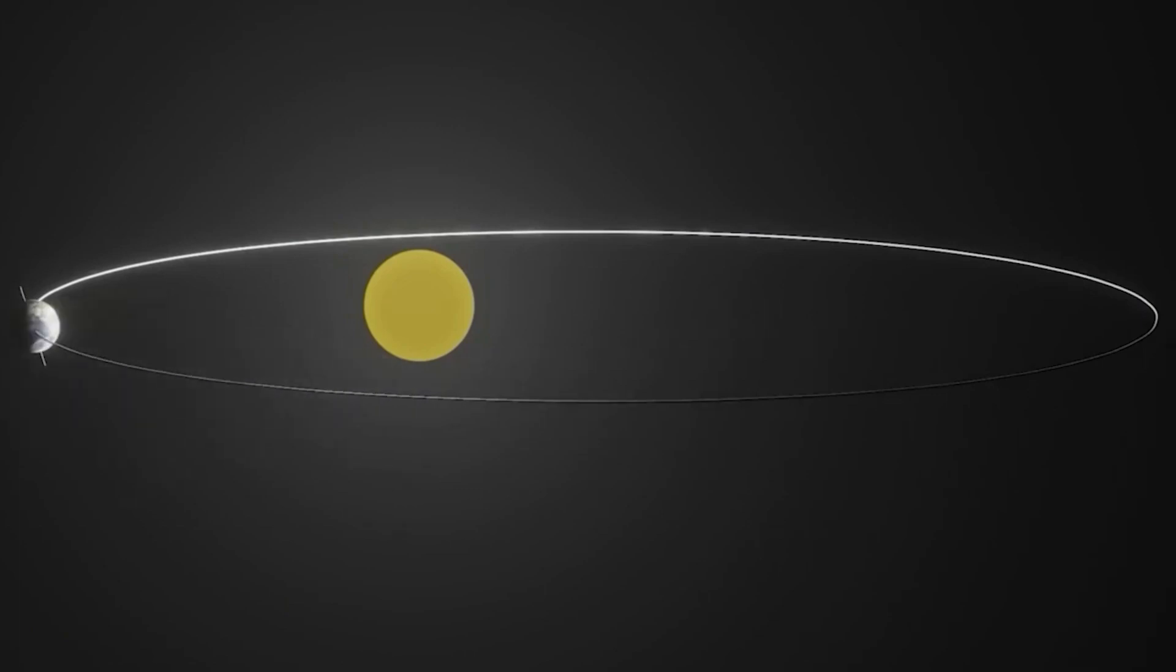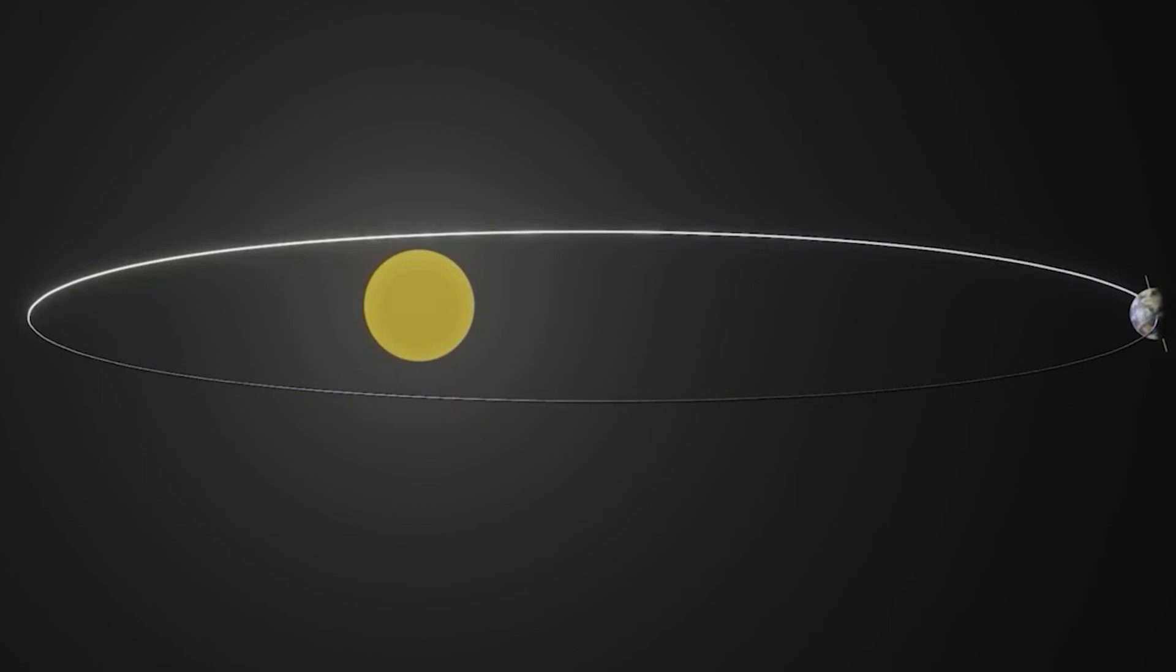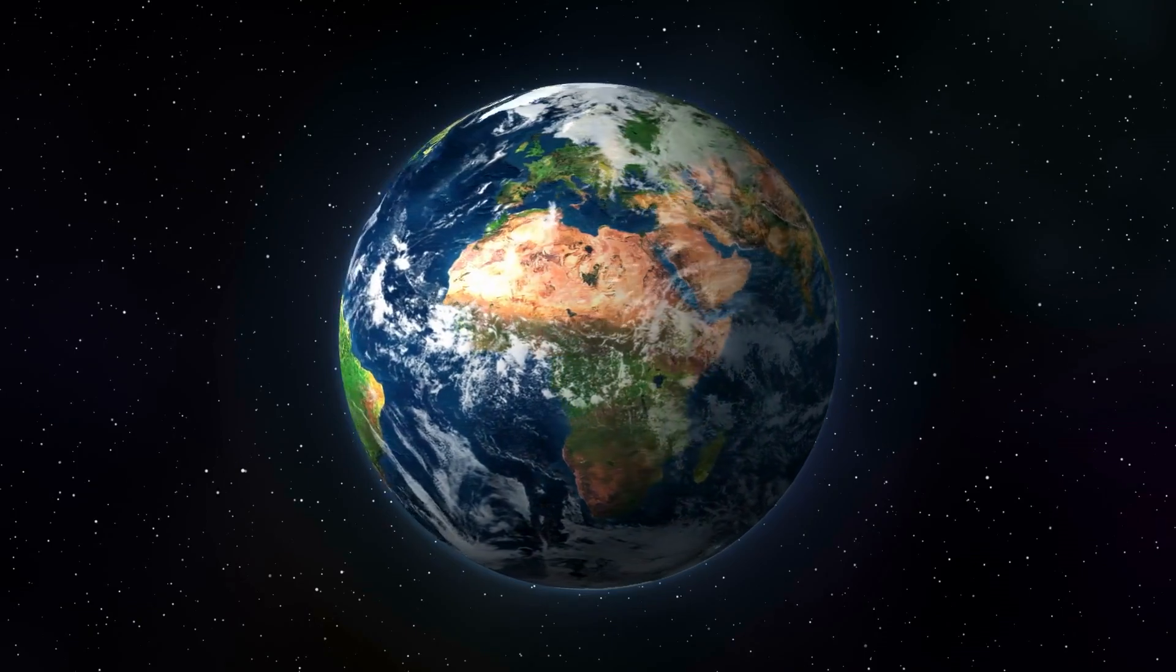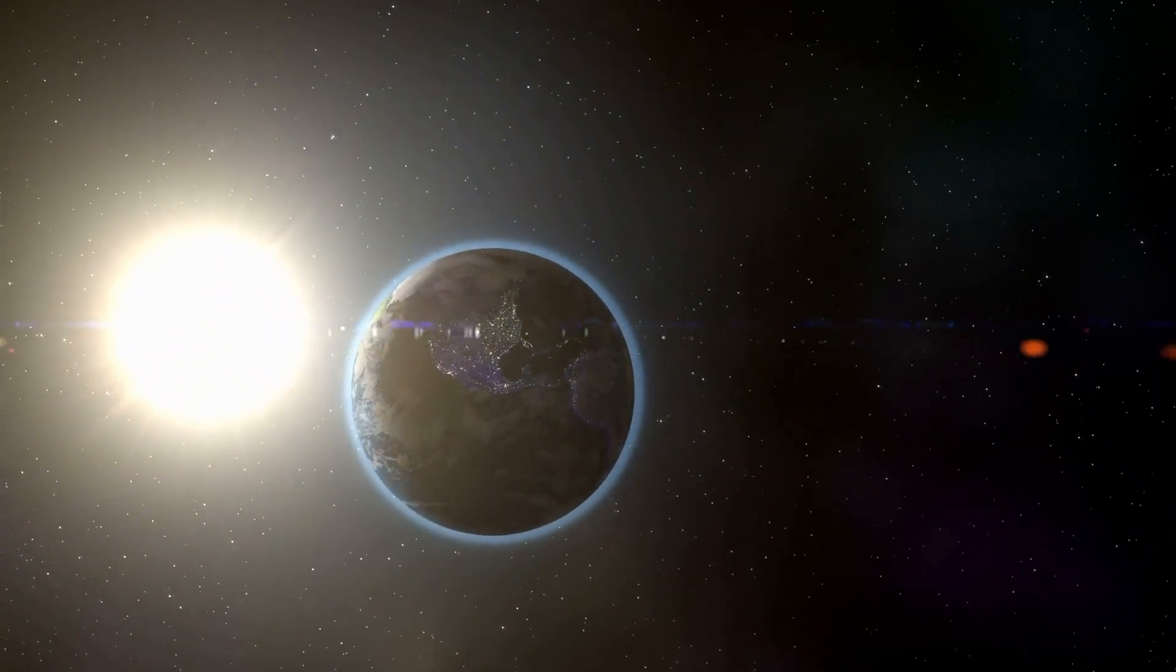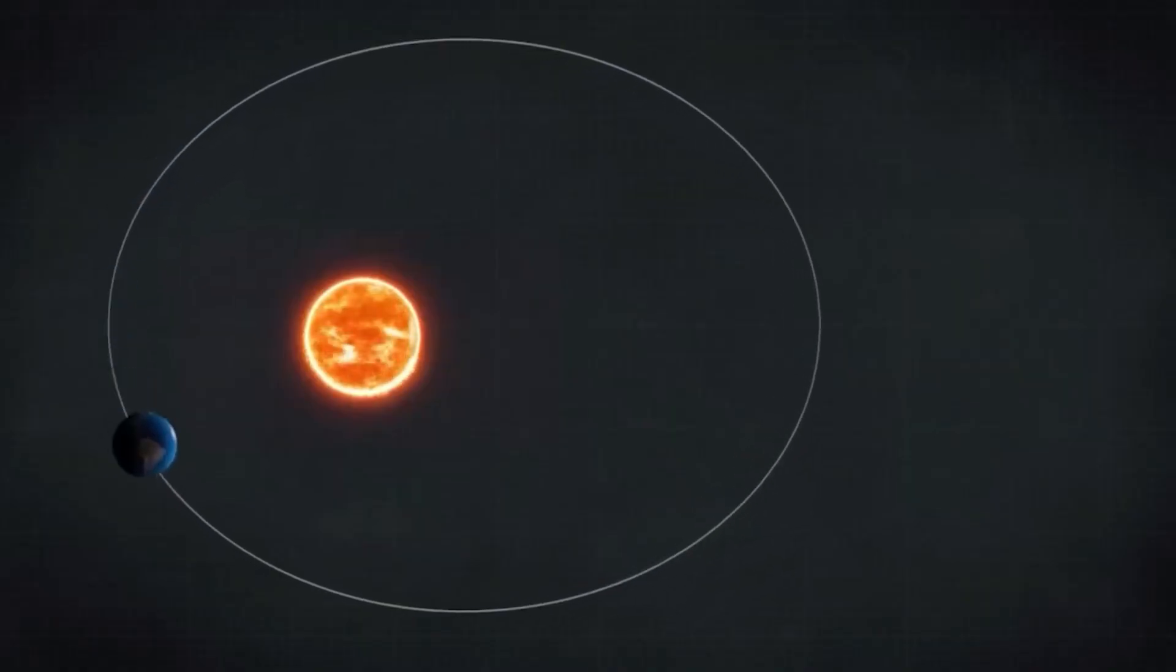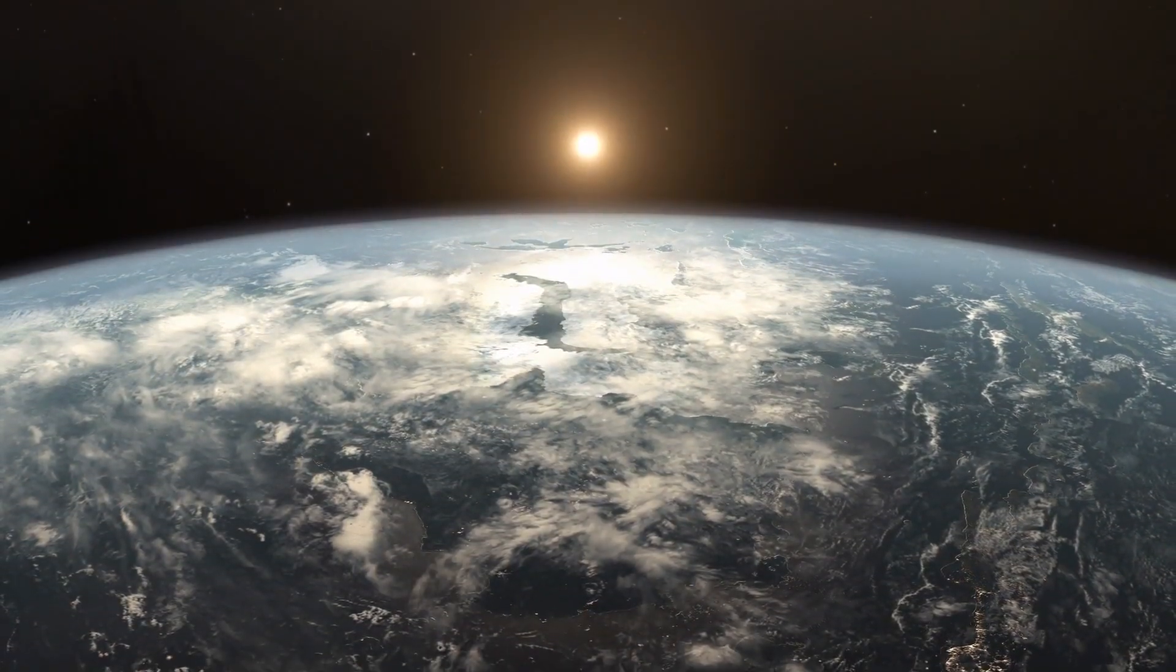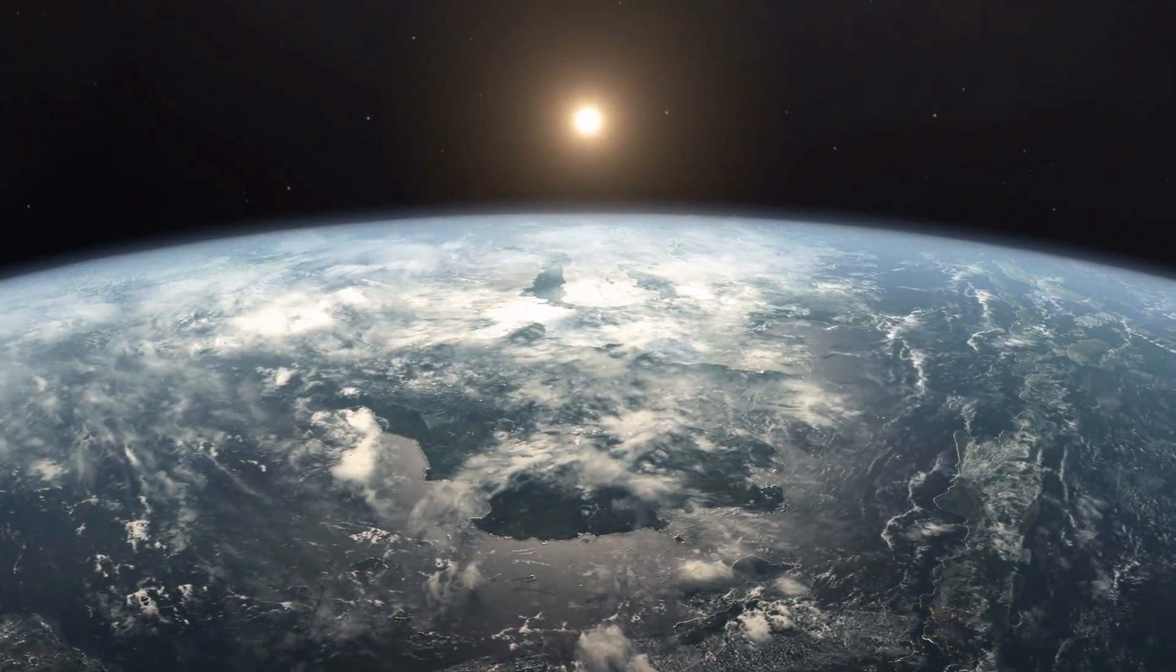It takes 25,772 years for the axis to complete a full circle. Axial precession makes seasonal contrasts more extreme in one hemisphere and less extreme in the other. This effect combines with the precession of the planet's orbit—essentially not just the axis wobbles, but the whole plane in which the planet travels around the sun. As a result, the closest and farthest points of the planet's orbit to the star are not fixed but move over time. Right now perihelion happens during southern summer, but in about 13,000 years it will be the northern hemisphere that will be closer to the star in the summer months.